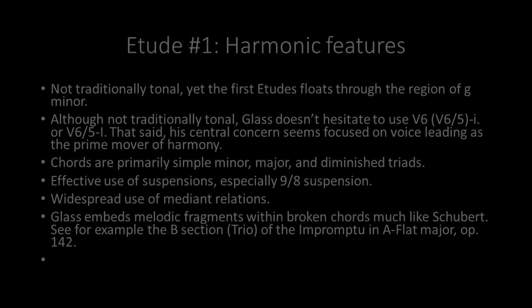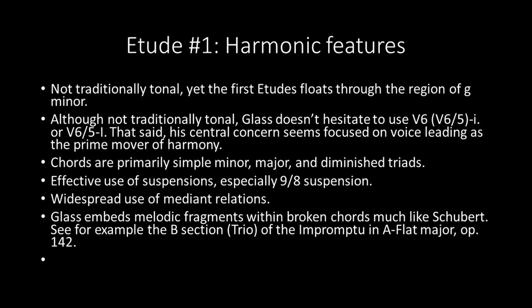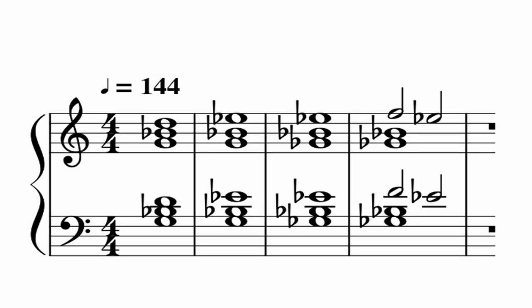The harmonic structure — this is not a traditionally tonal piece, and it does float through the region of G minor for the most part. It begins with what seems to be a kind of secondary dominant succession to the dominant of G minor, and then we have a G minor broken chord, and then it ends pretty solidly in G minor. Although not traditionally tonal, Glass doesn't hesitate to use what looks like a 5-6 or 5-6-5 to a 1 chord, assuming it's in G minor. His central concern seems to be focused on voice leading as the prime mover of harmony, and I think this is perhaps coming from his very early studies with Nadia Boulanger, in which he spent a whole lot of time doing counterpoint. The chords he uses are primarily simple chords — major, minor, and diminished triads. He does have an effective use of suspensions, especially the 9-8 suspension, which we hear at the end of that first four-bar phrase. And there's also a fairly widespread use of mediant relations as well.